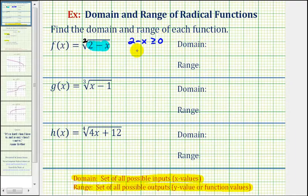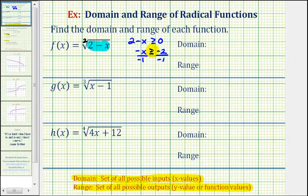So we'll subtract two on both sides. That would give us negative x is greater than or equal to negative two. Now to solve for x, we'll divide both sides by negative one. But remember, when solving an inequality, if we multiply or divide by a negative, we have to reverse the inequality symbol. So this would give us x is less than or equal to positive two, which would be the domain of the given function.